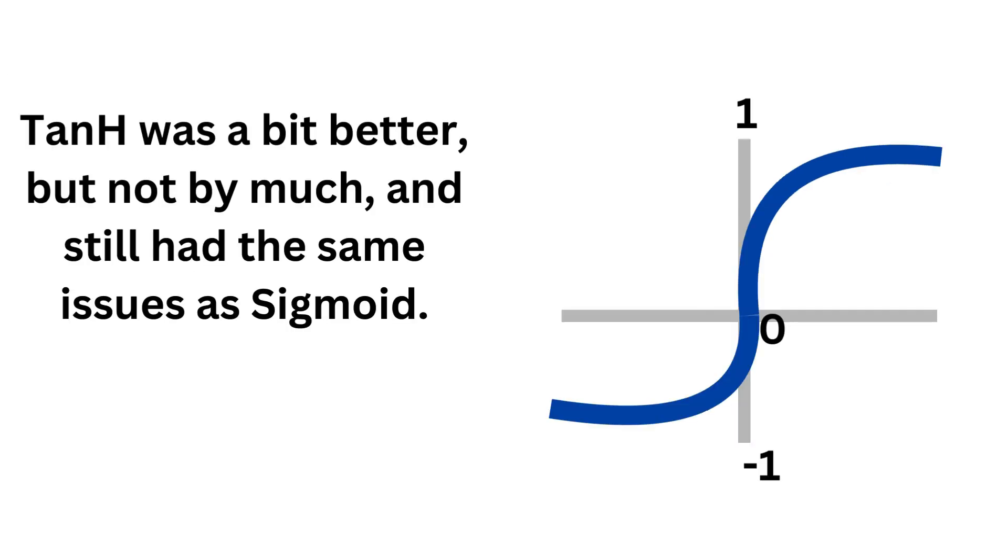tanh was a bit better, but not by much and still had the same issues as Sigmoid because it has a similar shape.